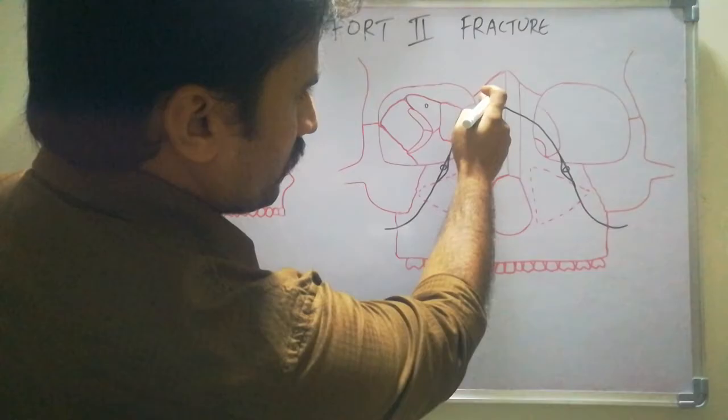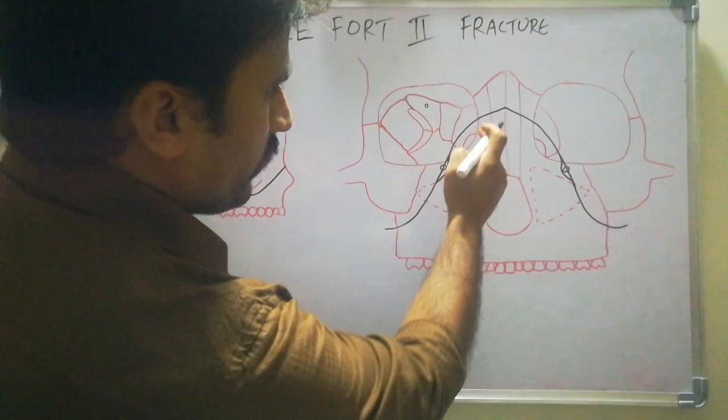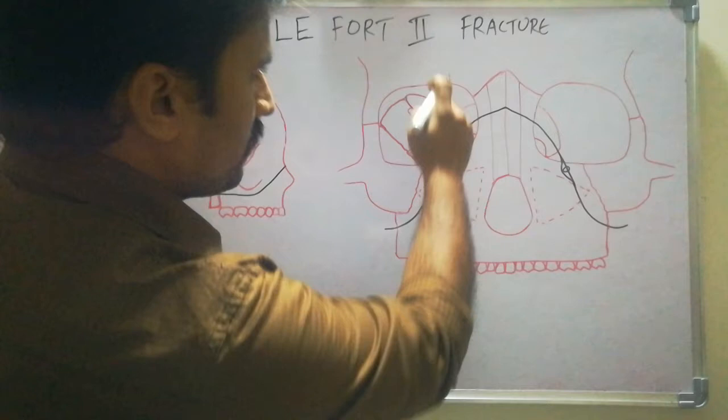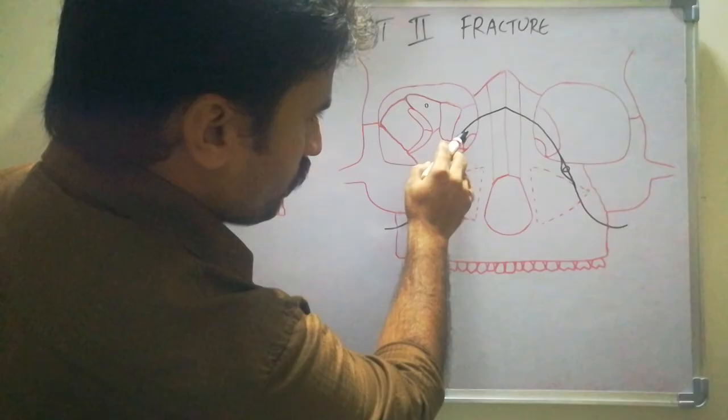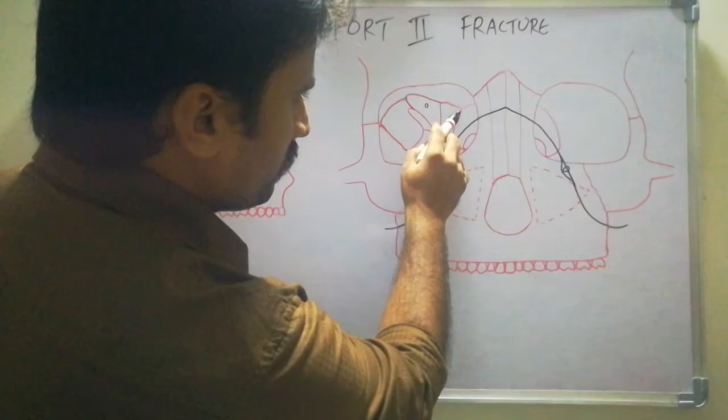After crossing this, we will enter the orbit. In the orbit, we have the medial wall, lateral wall, inferior wall, and superior wall. Under the medial wall, we have the lacrimal bone. This is the lacrimal bone, and this small one is the lacrimal sac.